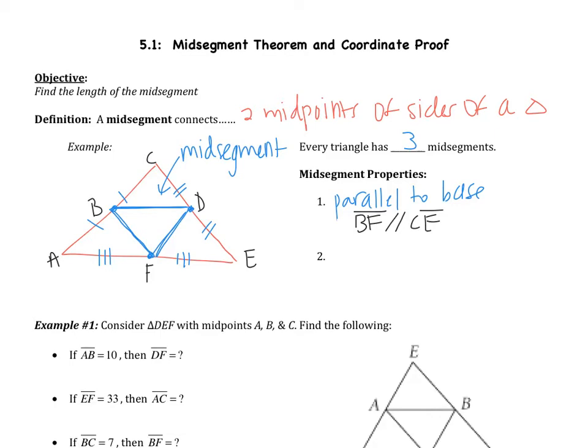Second important property is that it's half the length of the base. So in this case, BF, the length of BF, will be half of the length of CE.